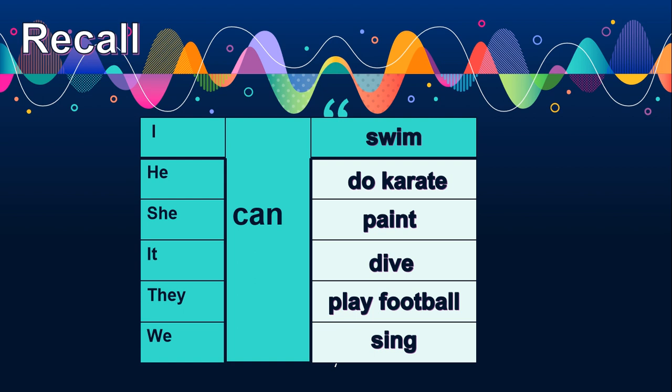The same goes to can't. I can't swim. He can't do karate. She can't paint. It can't dive. They can't play football. We can't sing. So, you use can or can't to express the ability of doing something.